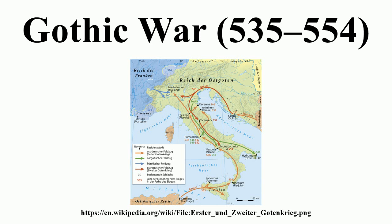During this war, Amalasuntha had allowed the Roman fleet to use the harbors of Sicily, which belonged to the Ostrogothic kingdom, as bases of operation. Through his agents, Justinian tried to save Amalasuntha's life, but to no avail. Her death, in any case, gave him casus belli for war with the Goths.